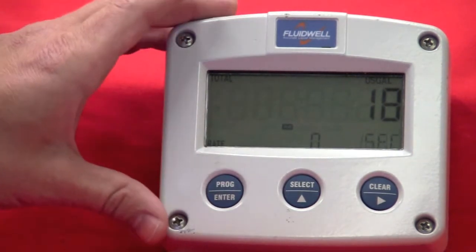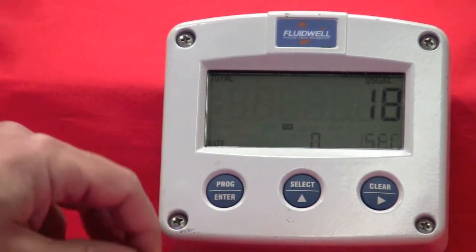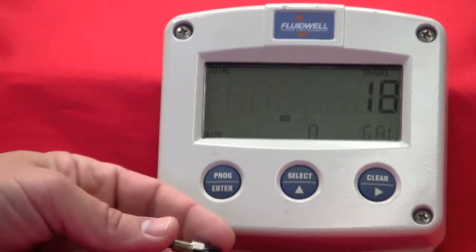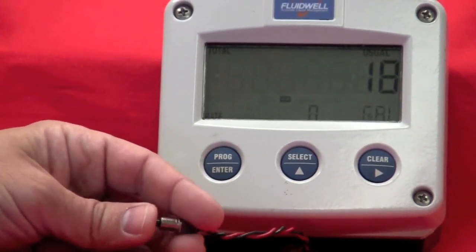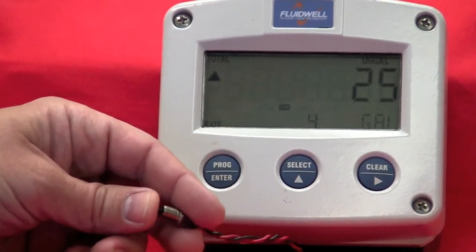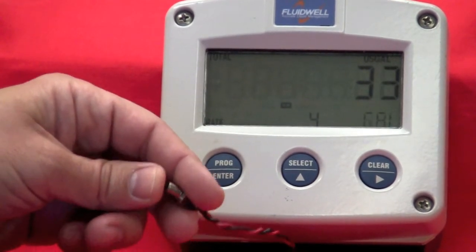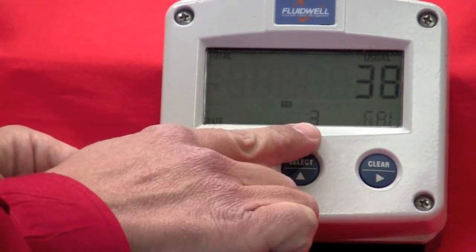The demo itself is a battery-powered unit, and we're simulating a pulse input from a flow meter with our little switch here. To simulate flow, just push the buttons in. You'll see the totalizer count up, and then you'll also see the flow rate as indicated here on the bottom.